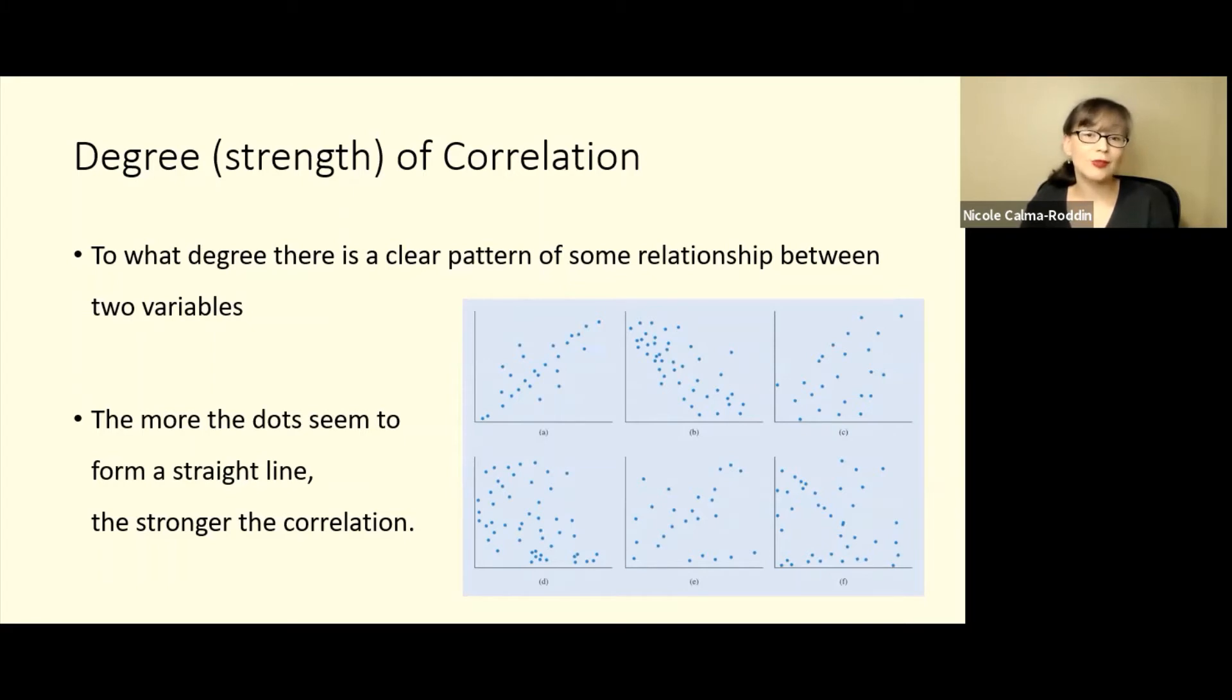The more the dots seem to form a straight line, the stronger the correlation. But the more spread out the dots are and the more they just form kind of a cloud, or they're less forming a straight line and more dispersed, then the weaker the correlation.